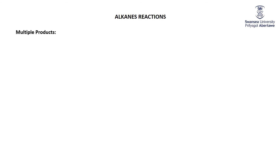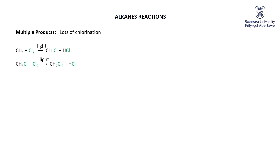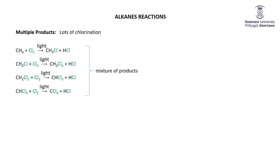One of the nasty things about halogenation reactions of alkanes is that you can make multiple products. First, there can be lots of chlorination: methane reacts with chlorine to make chloromethane (CH3Cl) plus HCl, but then that CH3Cl floating around in the reaction mixture can bump into a Cl radical to make CH2Cl2 (dichloromethane). Those molecules can be further chlorinated to make CHCl3 (chloroform) and then CCl4 (tetrachloromethane). So if you do this long enough, you end up with a big mixture of monochlorinated, dichlorinated, trichlorinated, and tetrachlorinated versions of methane.